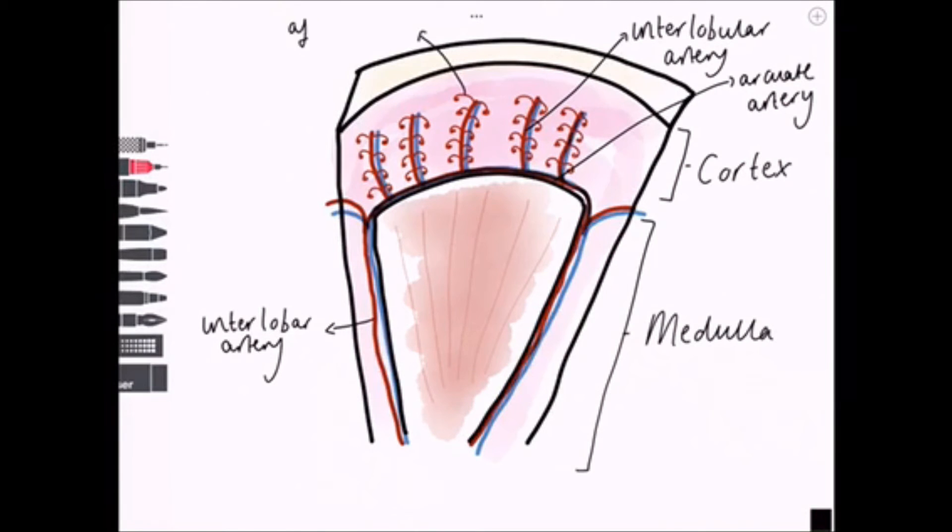These interlobular arteries supply the glomerulus with blood via the afferent arterioles. The efferent arterioles then carry blood away from the glomerulus. If the glomerulus is closer to the medulla, then the efferent arterioles form the vasa recta, which drain to the interlobular vein. If the glomerulus is in the cortex, efferent arterioles form the peritubular capillaries, which also drain to the interlobular vein.